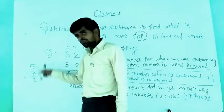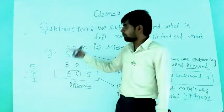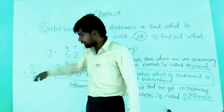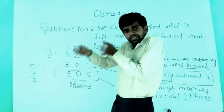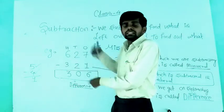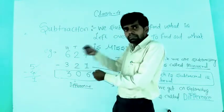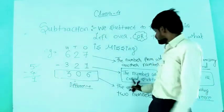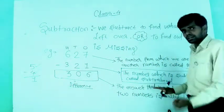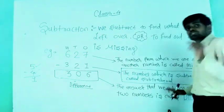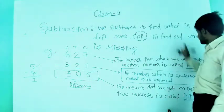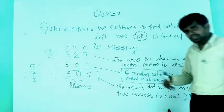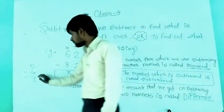And 4 is subtracted from 5. We are subtracting 4. The specific name given to the number which is subtracted is called the subtrahend. So 4 is the subtrahend. The number from which we subtract is the minuend, and the answer of subtraction is called the difference.